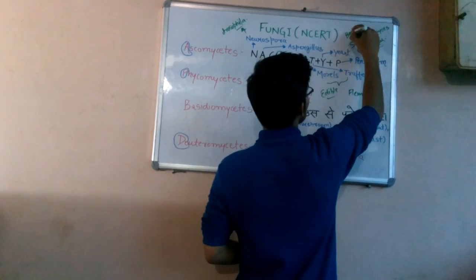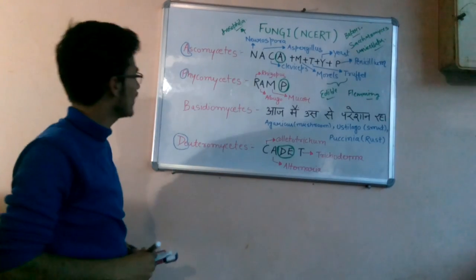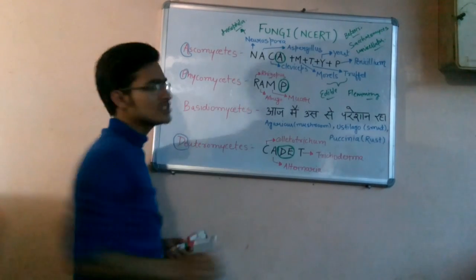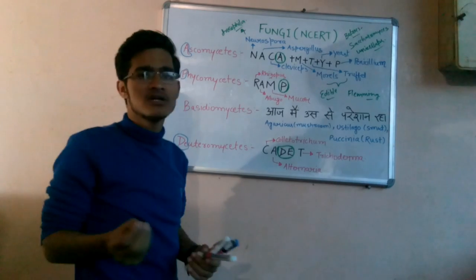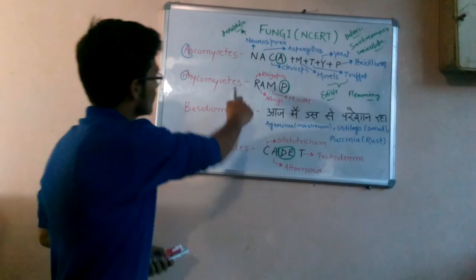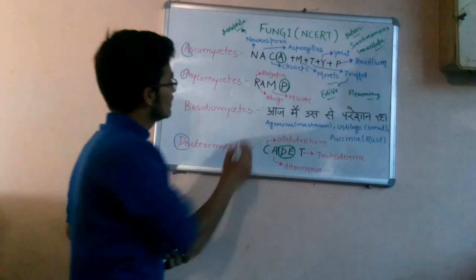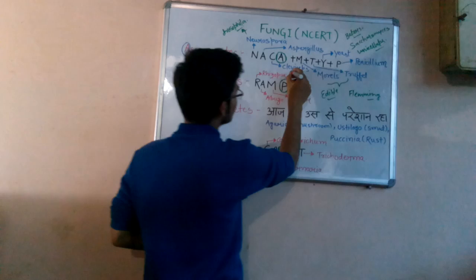After that comes Phycomycetes. RAMP is a very simple word - a ramp is a thing on which models walk. So RAMP: P indicates Phycomycetes and R means Rhizopus, which is the bread mold.